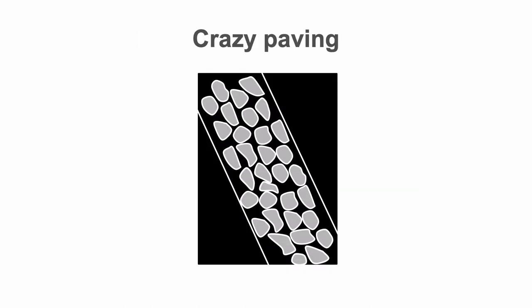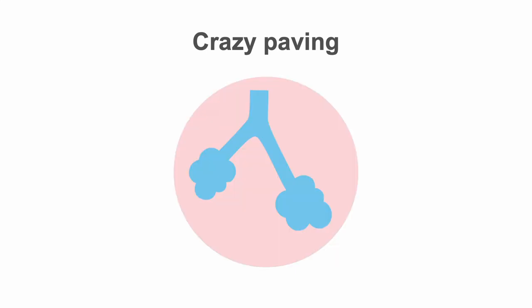Along with the ground glass opacities and consolidations, there is another characteristic finding commonly seen on CT of patients with COVID-19 pneumonia called crazy paving appearance. This sign is named for its resemblance to the paving stones used to surface and decorate roads. This finding indicates the presence of both air space and interstitial lung disease, and according to studies, crazy paving appearance was associated with peak lung involvement, correlating with the worst clinical and radiological picture.